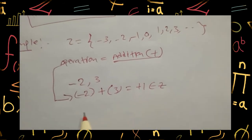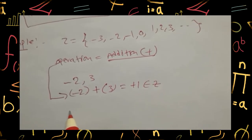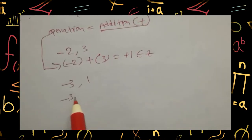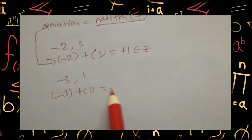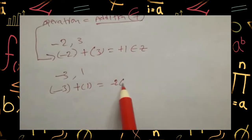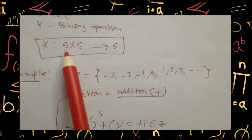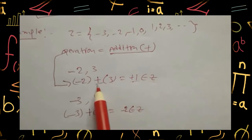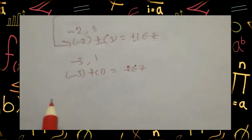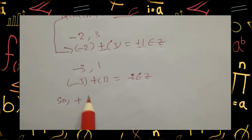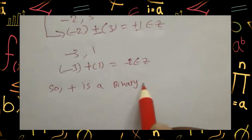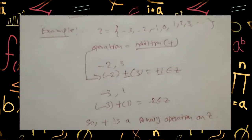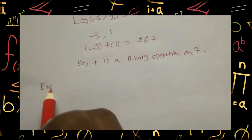Now take any more two elements: minus three and one. Again performing the operation addition on these two elements — minus three plus one equals minus two. Minus two is in Z, so minus two also belongs to Z. When you perform the operation on two elements and the result element is in the set, the operation is called binary. So addition is a binary operation on Z.